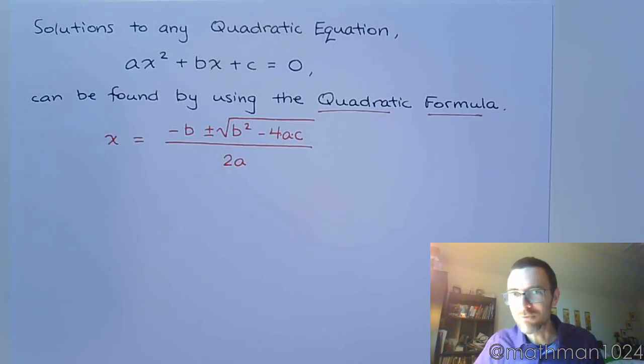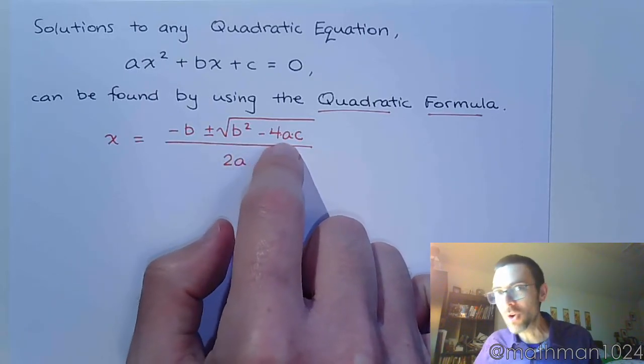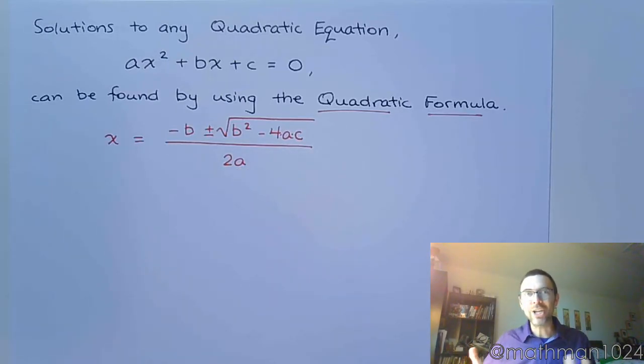x equals negative b plus or minus the square root of b² minus 4ac all over 2a. It's just like a creepy jack in the box that you would have played with as a child. Well, let's see how this guy works.